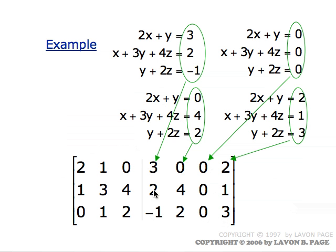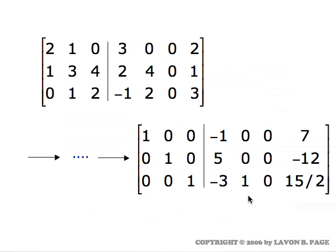You can put all four columns on the right and solve all four systems at the same time. The reason you can do that is because the row operations that you choose don't have anything to do with what's on the right. The row operations are totally determined by what's going on with the coefficients, which was the same for all the systems. So you could solve the systems separately using the same sequence of row operations, or combine it all and solve them all at once with just one pass through.